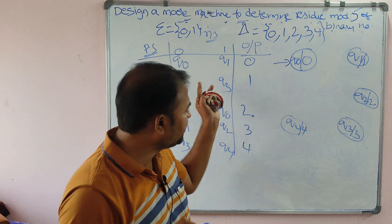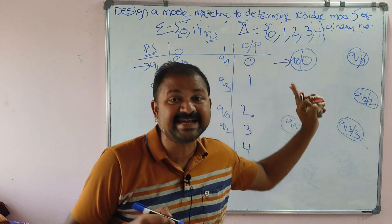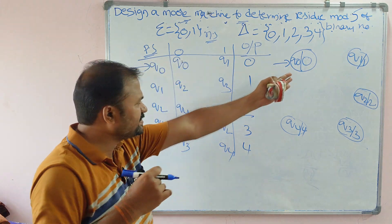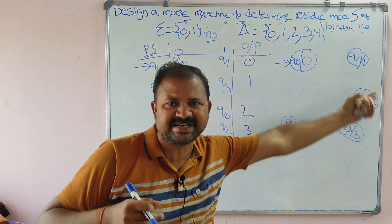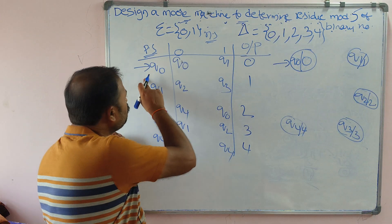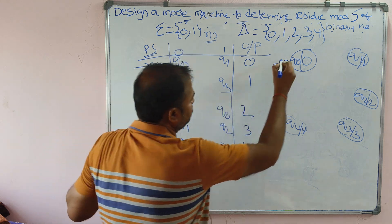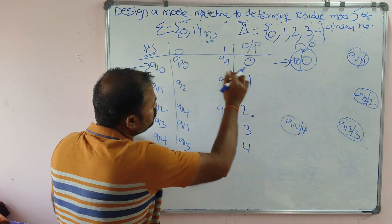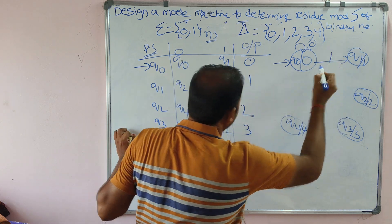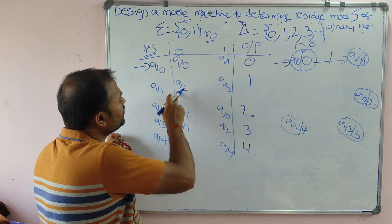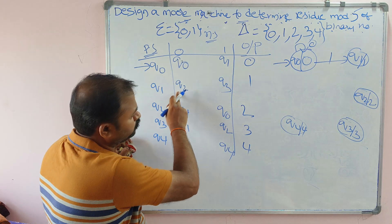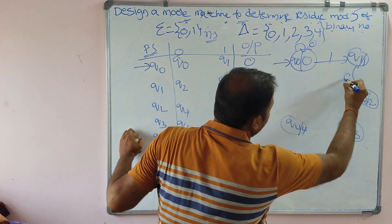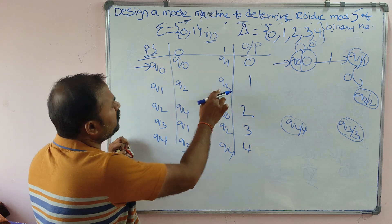In the transition diagram, the states are q0, q1, q2, q3, q4. In a Moore machine, the output depends only on the present state, so we write the output inside the state. The output of q0 is 0, output of q1 is 1, output of q2 is 2, output of q3 is 3, and output of q4 is 4. In Mealy machines, the output is written separately.